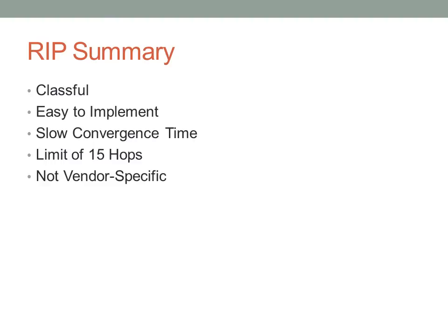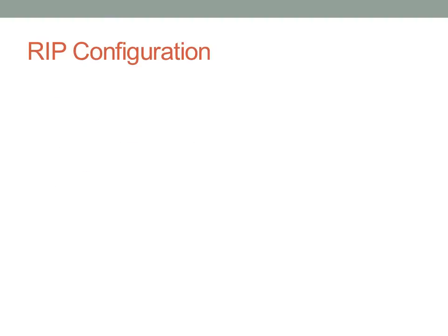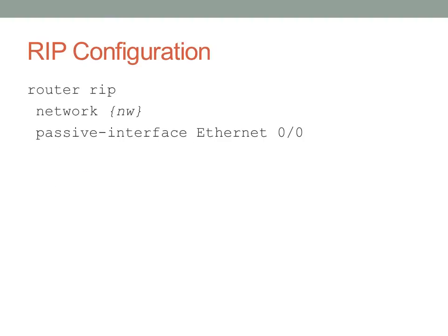RIP is not vendor specific, so you'll find a lot of different routers running RIP, including a few consumer routers. The router at home connected to a DSL modem or a cable modem may actually be able to run RIP. RIP configuration is fairly straightforward. You implement the command 'router rip' under global config mode, and after that you type each network one after the other — just the network number.